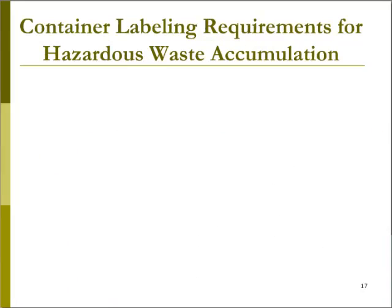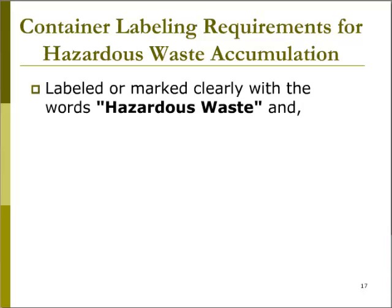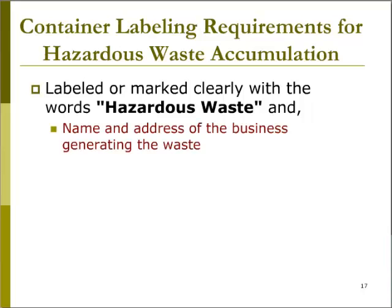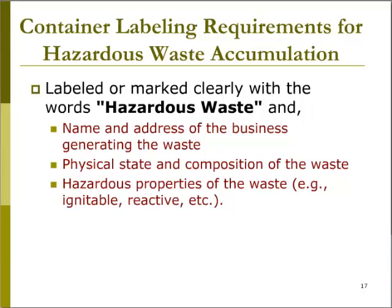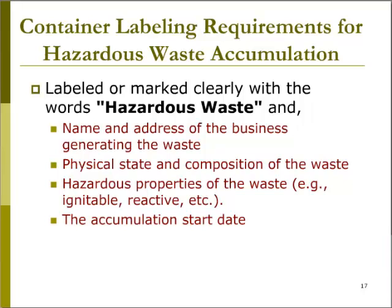Container labeling requirements for hazardous waste accumulation are found in California Code of Regulations Section 66262.34F. It states that hazardous waste containers must be clearly marked with the words 'hazardous waste,' the name and address of the person or business producing the waste, the physical state (usually liquid or solid) or composition of the waste, the hazardous properties of the waste, and the date upon which each period of accumulation begins. Regarding hazardous properties, you would mark if the waste is ignitable, corrosive, reactive, toxic, or has another quality that makes it hazardous. For example, used oil is a California hazardous waste, and the hazardous waste property would be 'used oil.'